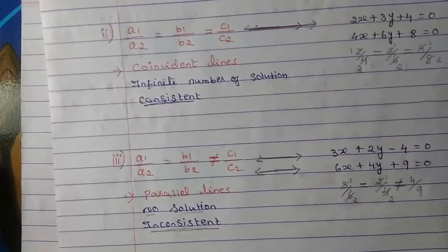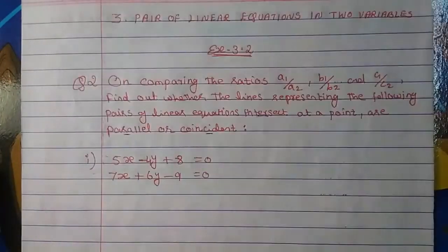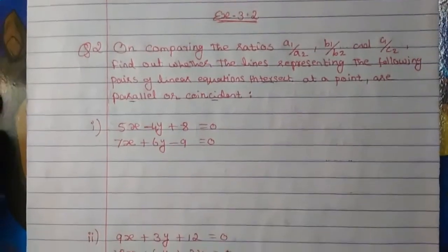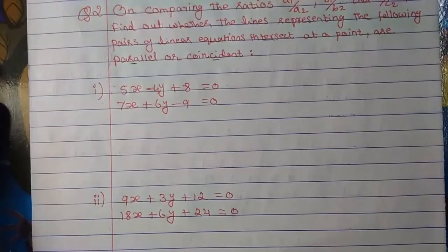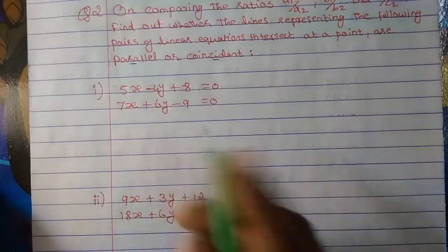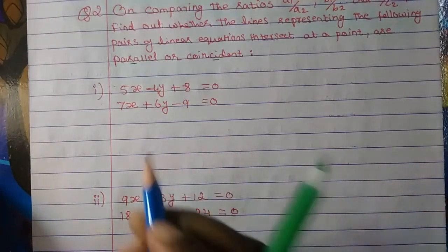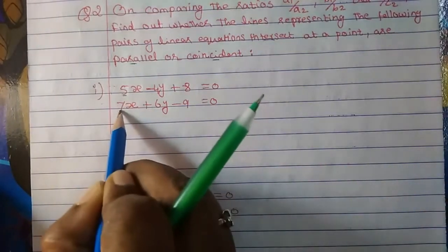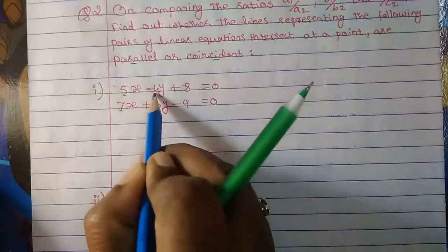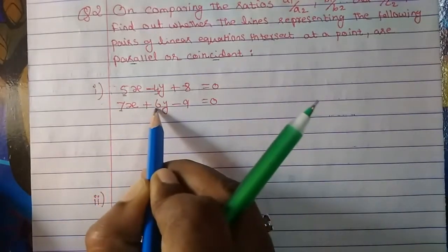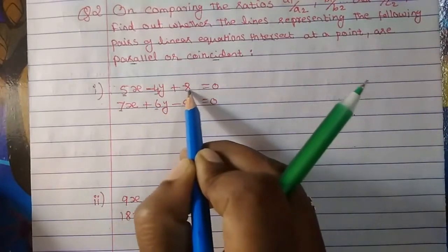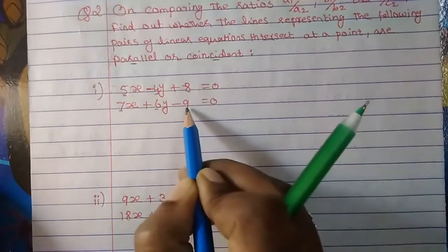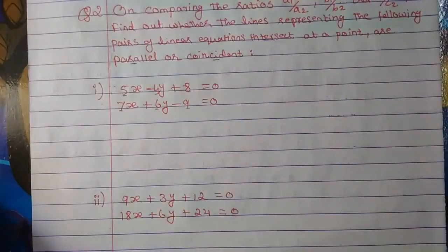So this is what we are going to do. Let's begin. So the first one, we have here. This is our a1, this is a2, this is b1, this is b2, and this is c1 and c2. Let's compare and see.